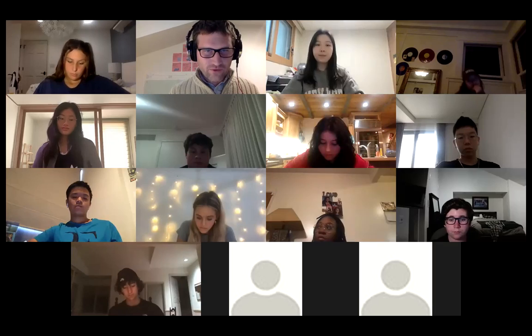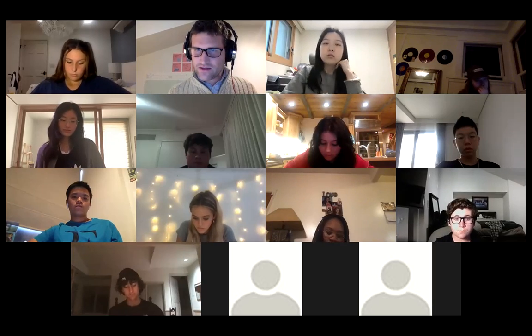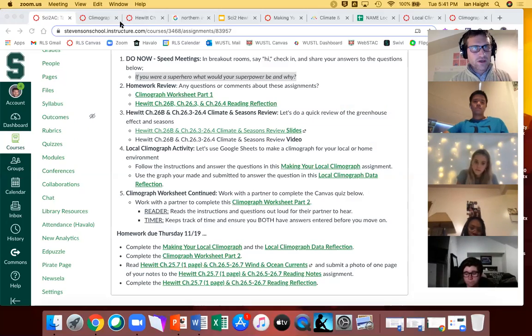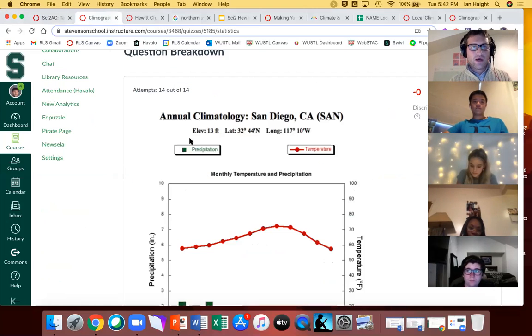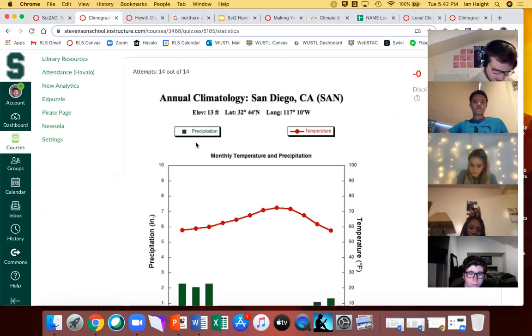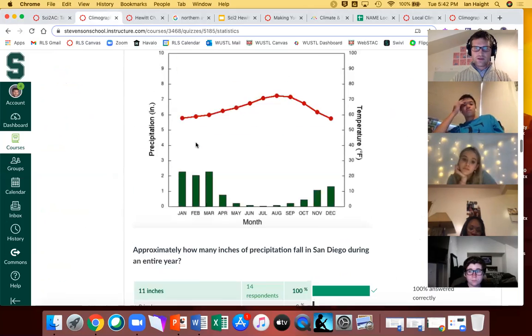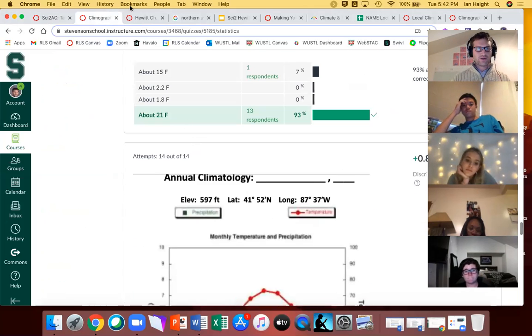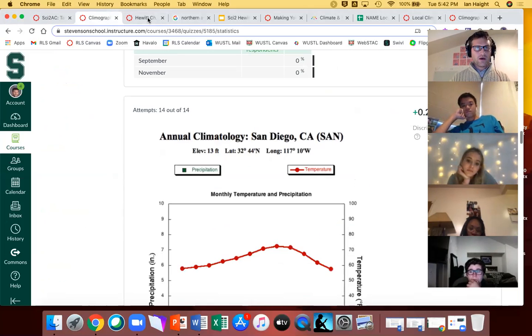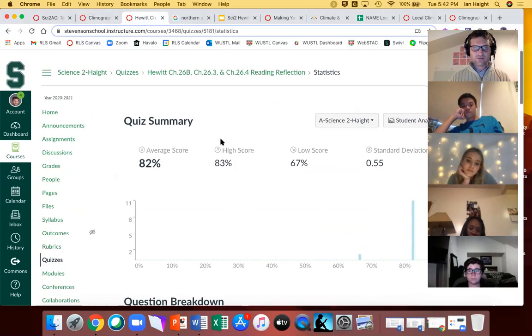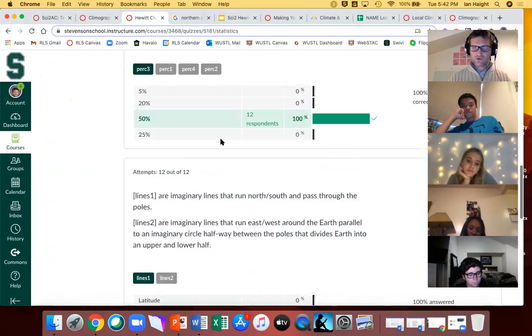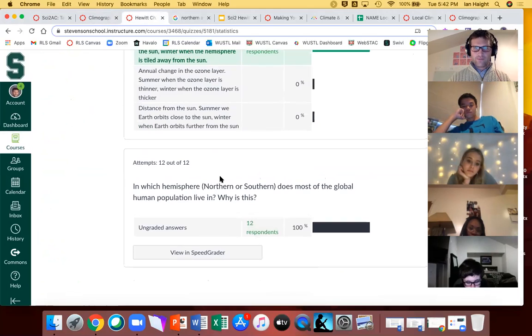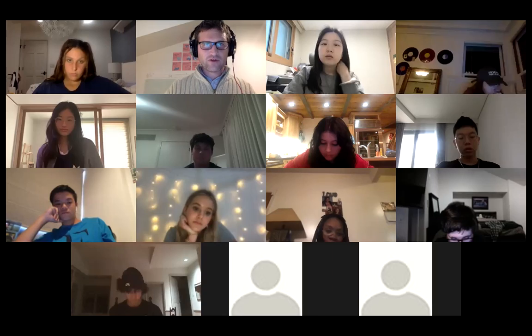Thank you everyone for sharing. Next on the docket is checking homework. You had to complete the climate graph quiz. Most of you did this in class and answers looked great. Not seeing any confusion over any particular question. Then there was the Hewitt various parts of chapter 26. Multiple choice looks great.